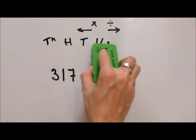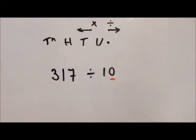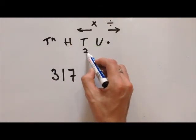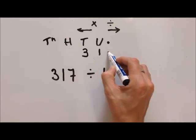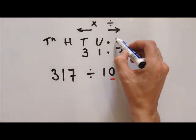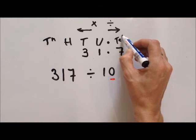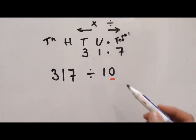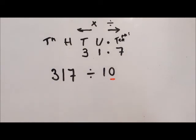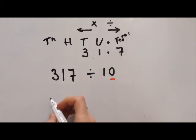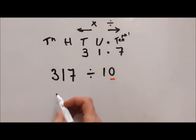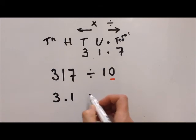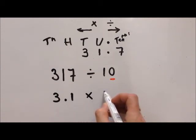If we move everything to the right one column, we end up with the 7 in the tenths column, while the decimal point has stayed in the same place. The same principle applies with multiplication, but everything moves to the left. So let's say we have 3.1 times 10.